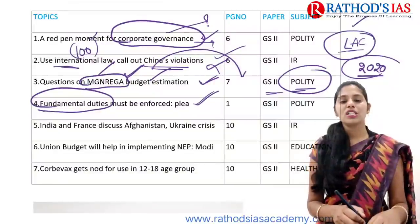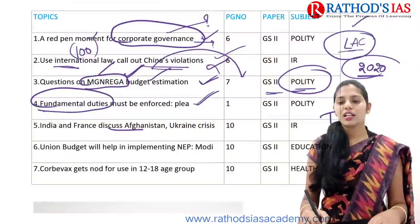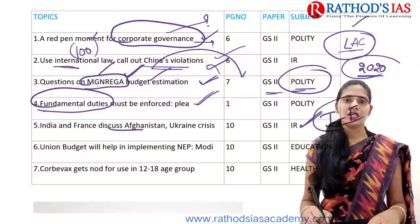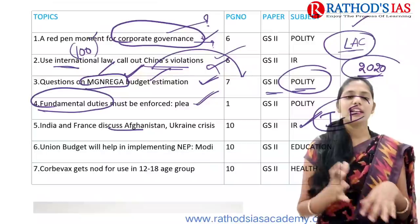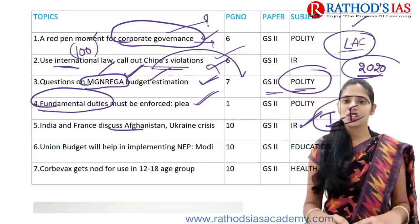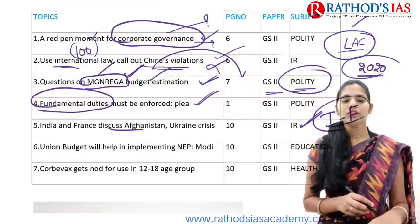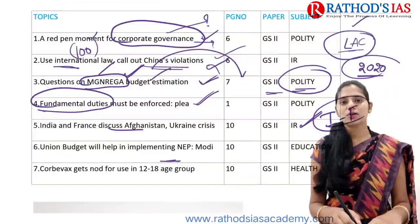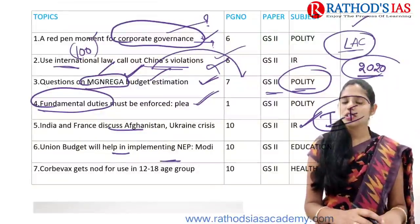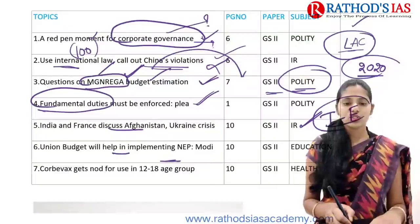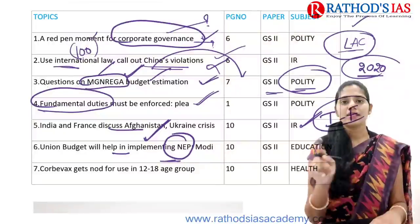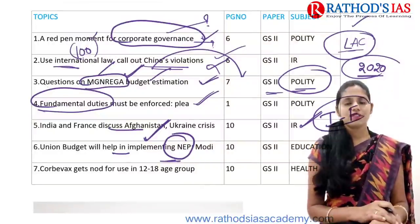The next topic is about India and France discussing the Afghanistan and Ukraine crisis. This article is mainly talking about India-France relations. This topic is important from our international relations. Whenever you are getting any articles regarding India with other countries, you need to open your map because there are high possibilities of getting map-related questions in your UPSC prelims. The next topic is about NEP — National Education Policy. Our union budget will help in implementing this national education policy, and here we need to focus on the National Digital University highlighted in this article.